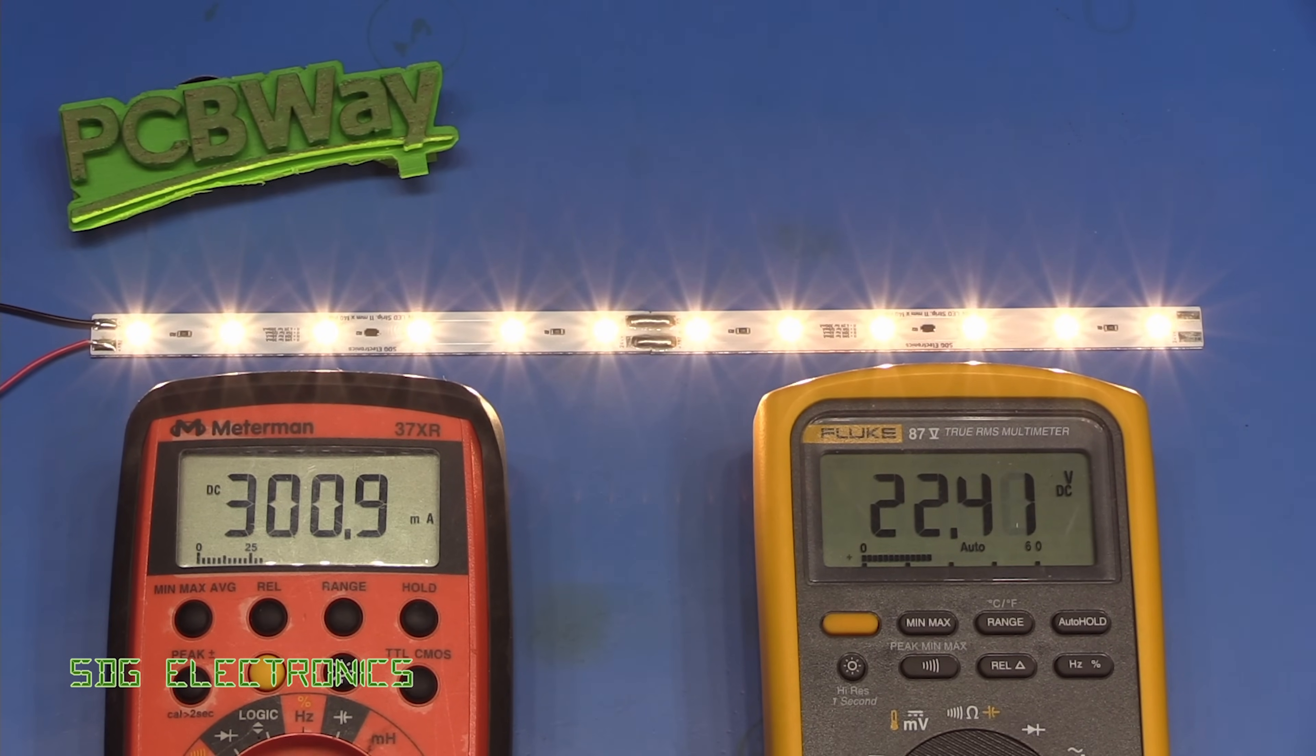So 22.5 volts or so, we're properly regulated at 300 milliamps and we can momentarily bring that up to 24 volts and we're still regulated there properly. So that seems to be working quite nicely.